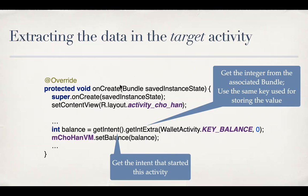This is a simple example of using explicit intents. We'll go and build this activity first, and then after we are done, there are a couple of other things. When you do just this, we'll be left with a couple of bugs which we'll have to fix. Then we'll look at an example of implicit intents. We'll stop here — thank you.